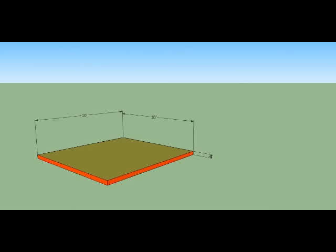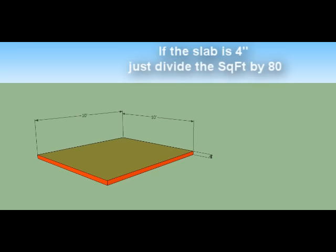For now, we're going to concentrate on how many square feet you have and the thickness. For a four-inch-thick slab, you just multiply the number of square feet and then divide by 80 — that's it. So for a 10 by 10 slab, that's 100 divided by 80, which gives you one and a quarter cubic yards. Pretty simple and straightforward.